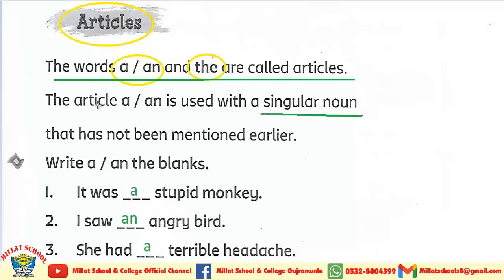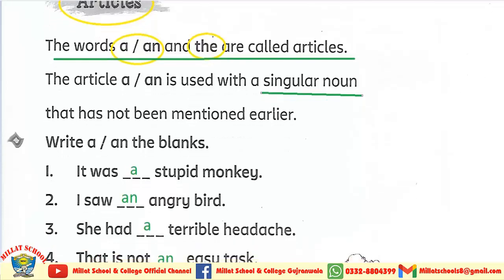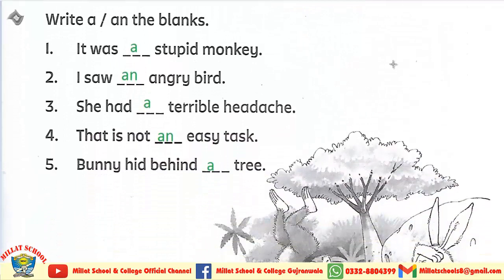My dear kids, use of 'a' and 'an': you have done this in your previous classes also. 'A' is used with all consonant sounds, and 'an' is used with all vowel sounds. Now quickly we will solve this activity — write 'a' or 'an' in the blanks. I have solved it for you: 'It was a stupid monkey.' 'I saw an angry bird.' 'She had a terrible headache.' 'There isn't an easy task.' 'Bunny hid behind a tree.'